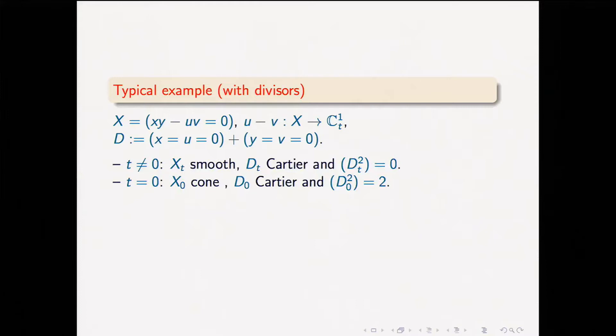Before looking at the other cases, let's look at some examples. How can it happen that something is Cartier in every fiber but in fact not Cartier? Let's start with this example. I have a three-fold which is the quadric cone — an affine three-fold — and I map it by u minus v. Then I look at the divisor x equals u equals 0, and y equals 0: just the union of two planes that meet at the origin.